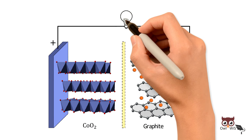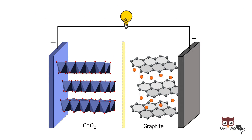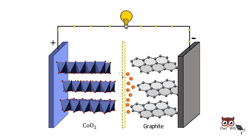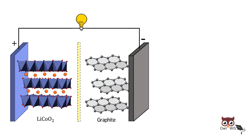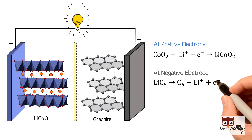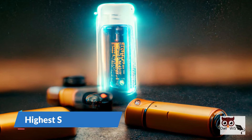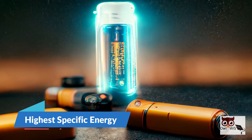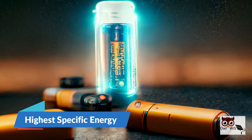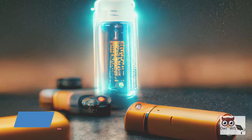During the discharge process, lithium ions are de-intercalated from the graphite crystal, enter the electrolyte, pass through the separator, and then re-intercalate into the cobalt oxide structure. The reactions are reversed during discharging. LCO batteries have the highest specific energy among all types of lithium-ion batteries.